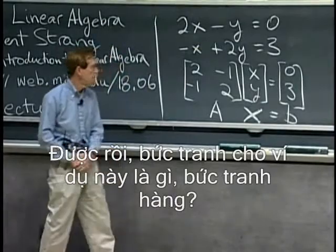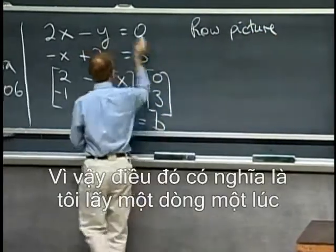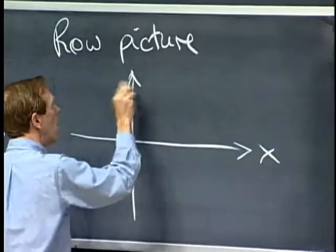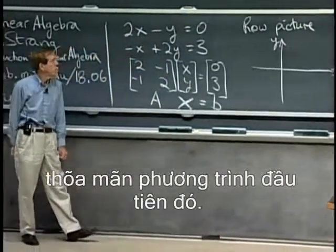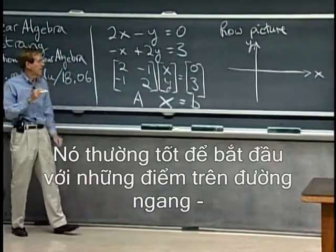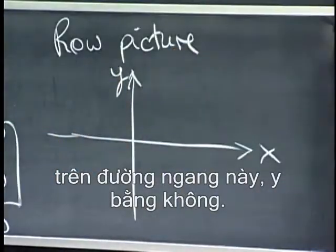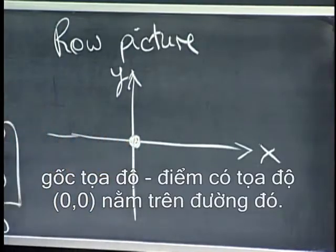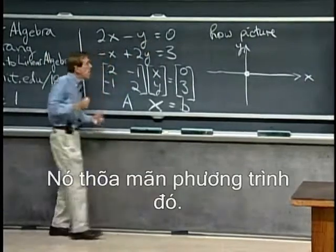What's the picture for this example? The row picture. So here comes the row picture. That means I take one row at a time and I'm drawing here the xy plane and I'm going to plot all the points that satisfy that first equation. So I'm looking at all the points that satisfy 2x minus y equals zero. It's often good to start with which point on the horizontal line. On this horizontal line, y is zero. The x-axis has y is zero, and in this case actually then x is zero. So the point, the origin, the point with coordinates 0,0 is on the line. It solves that equation.